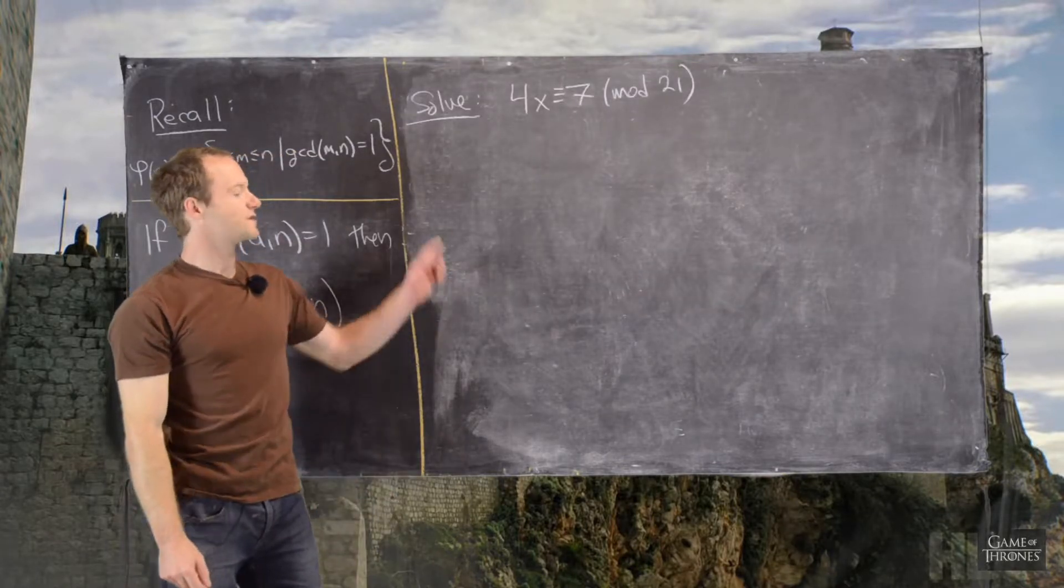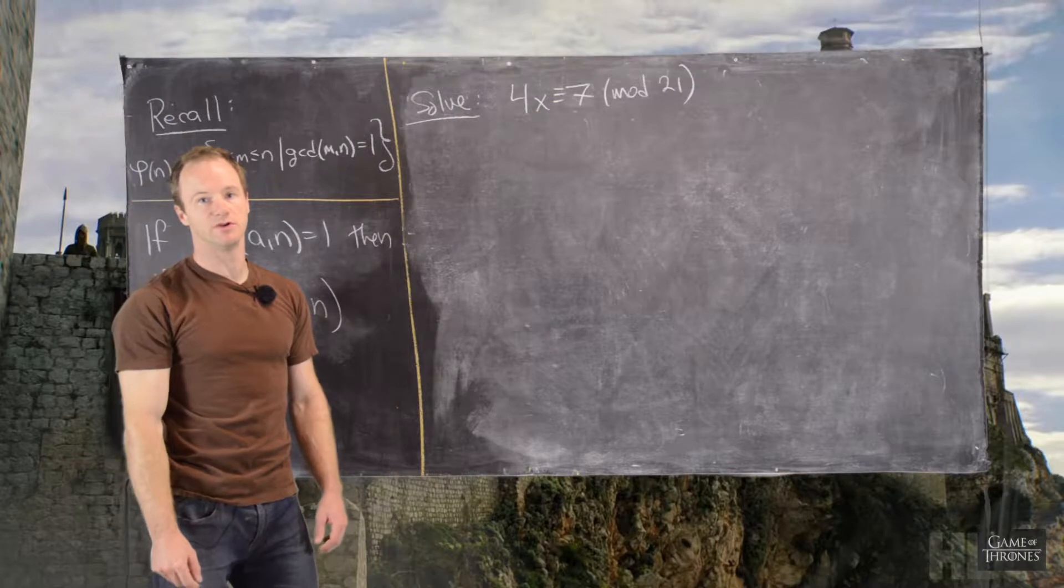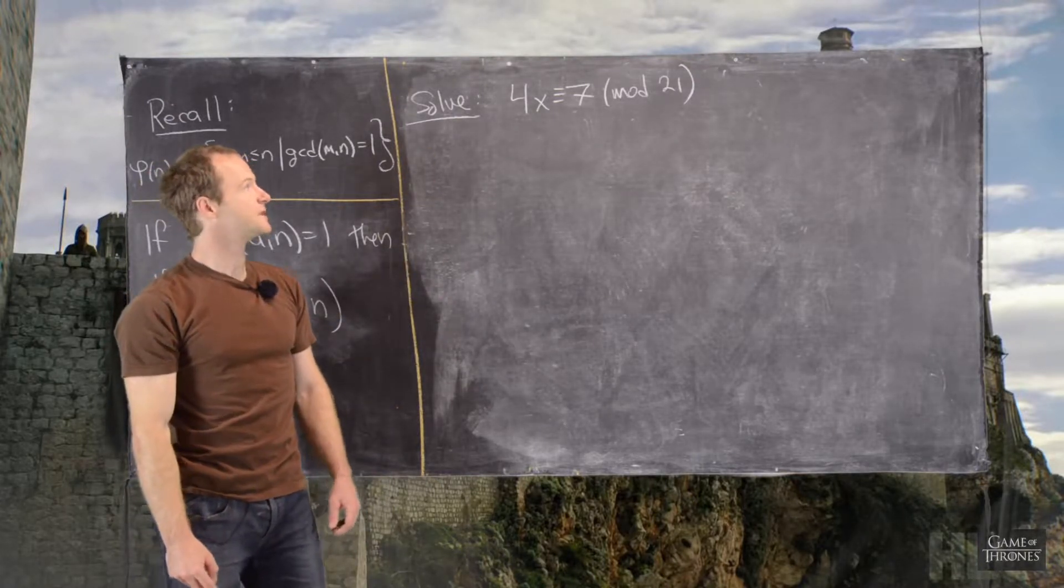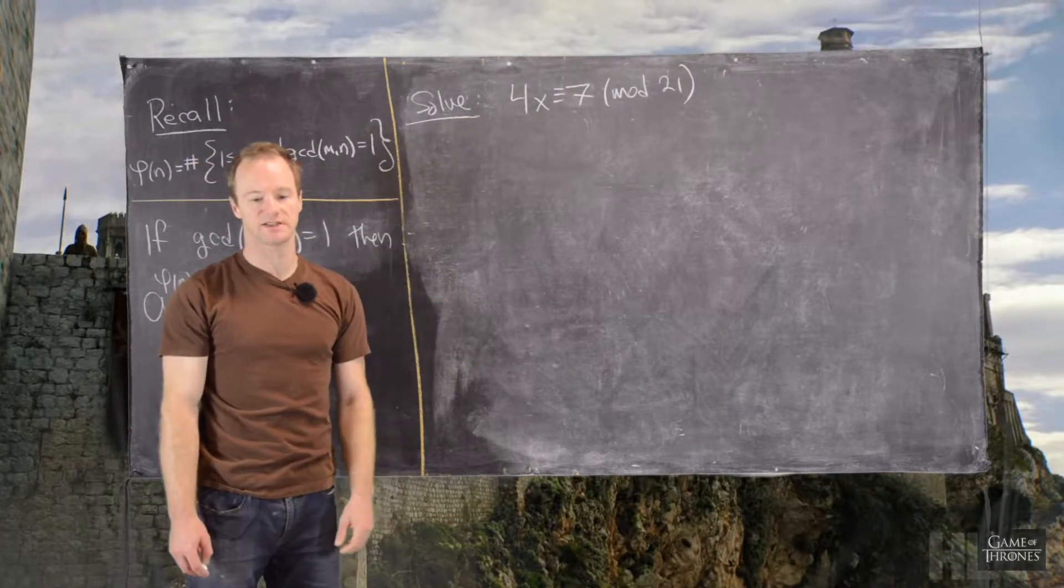Okay. So, now that we've seen this proposition, what we will do is use it to solve this linear congruence. So, the linear congruence is 4x is congruent to 7 mod 21.